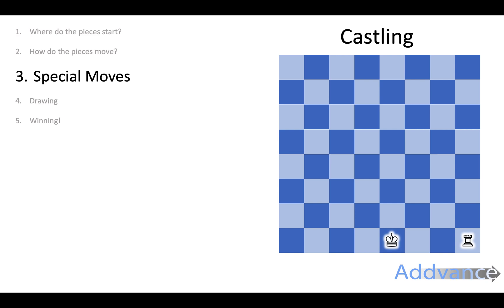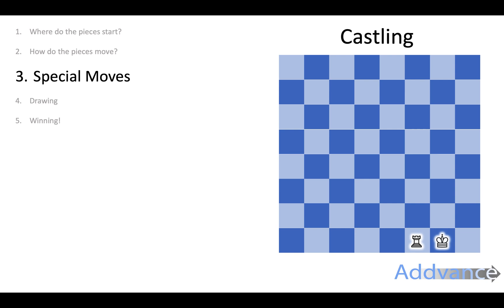Castling is the only move where you can move two pieces at the same time. It's when you have a king and a rook — you move the king two spaces and the rook jumps over it. It only works if the king and the castle have not moved before, and the king is not attacked by another piece — that's called being in check. You can also have the king and the castle on the other side of the board; again, the king moves two spaces and the rook jumps over it.